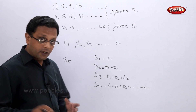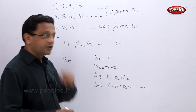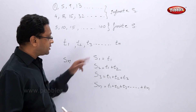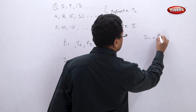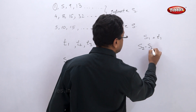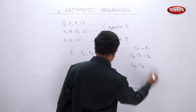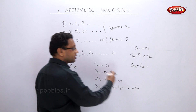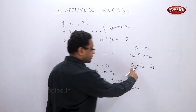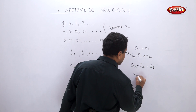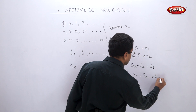We can observe one more thing: S1 is T1, and S2 is T1 plus T2. So S2 minus S1 equals T2, because T1 gets cancelled. Similarly, S3 minus S2 equals T3. So in general, Sn minus Sn-1 equals Tn.